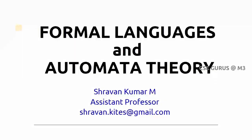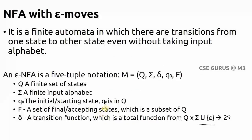Welcome to the class of Formal Language and Automata Theory. Now coming to the concept of NFA with epsilon moves. Till now we have seen finite automata where you reach from one state to another by taking some input. We can also find transitions where you move from one state to another without giving any input — that transition is called an epsilon transition or epsilon move.